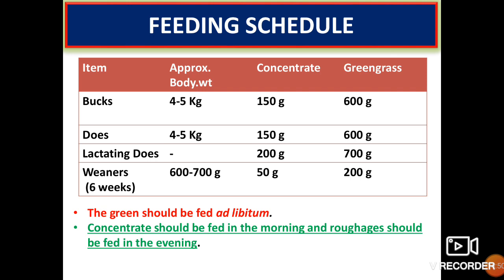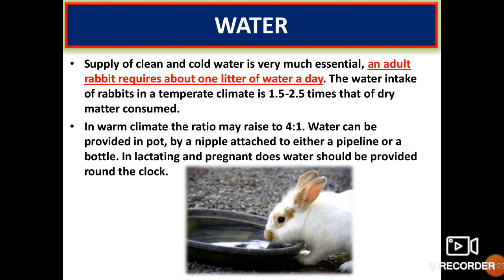Here is the feeding schedule. For bucks weighing 4-5 kg, 150 g of concentrate and 600 g of green grass should be fed. For does, it is the same as for bucks. For lactating does, the concentrate feed should be 200 g and green grass 100 g. Concentrates should be fed in the morning and roughages in the evening. Supply of clean and cold water is essential. An adult rabbit requires about 1 litre of water per day. Water intake in a temperate climate is 1.5 to 2.5 times that of dry matter consumed; in warm climates, the ratio may rise to 4:1. Water can be provided by nipple attached to either a pipeline or a bottle. In lactating and pregnant does, water should be available around the clock.